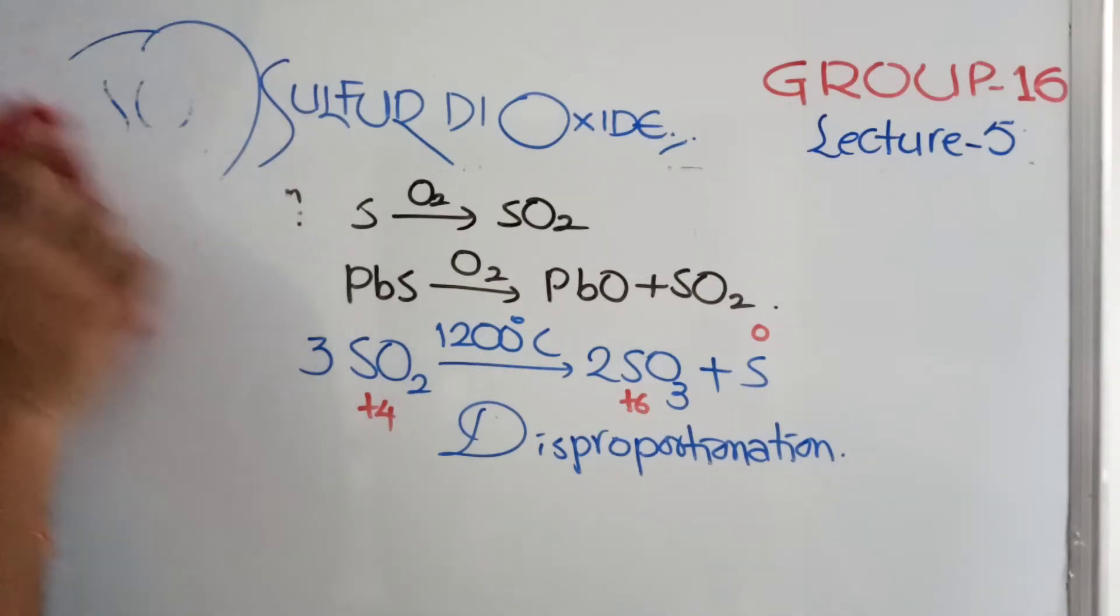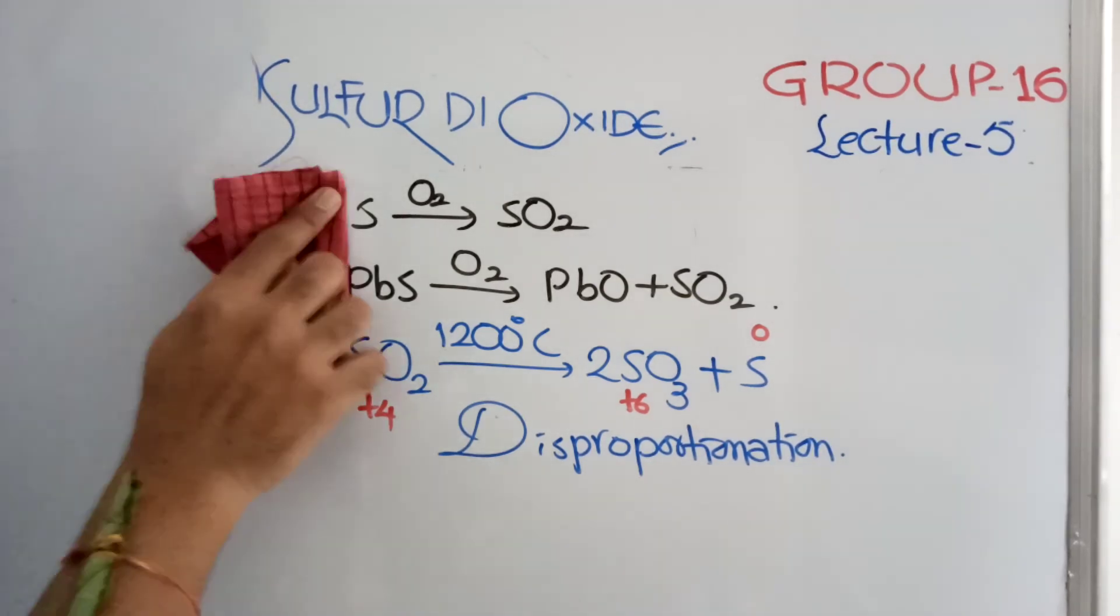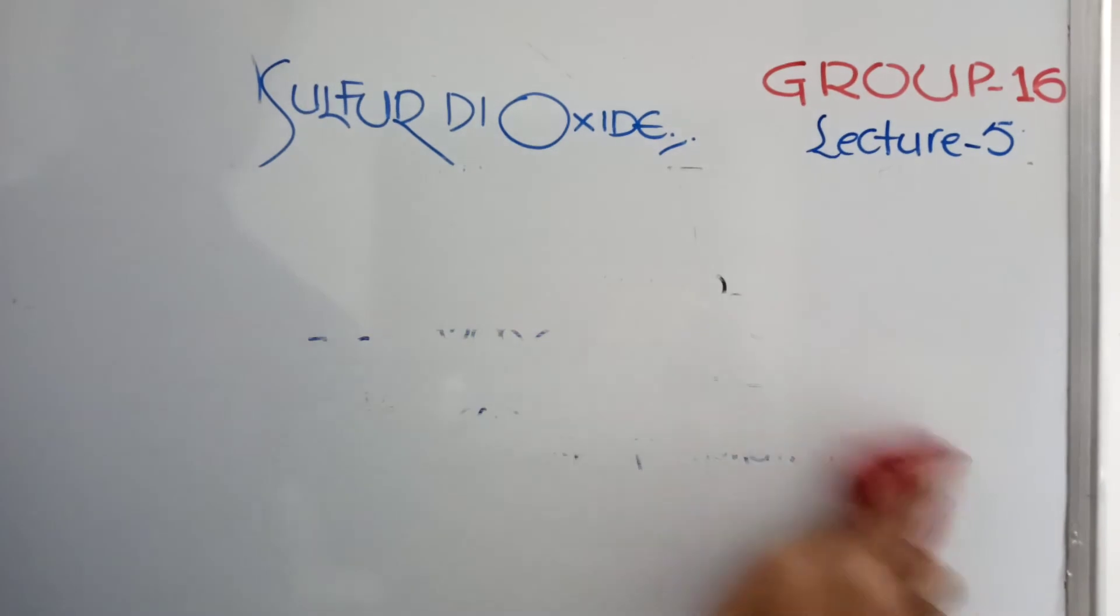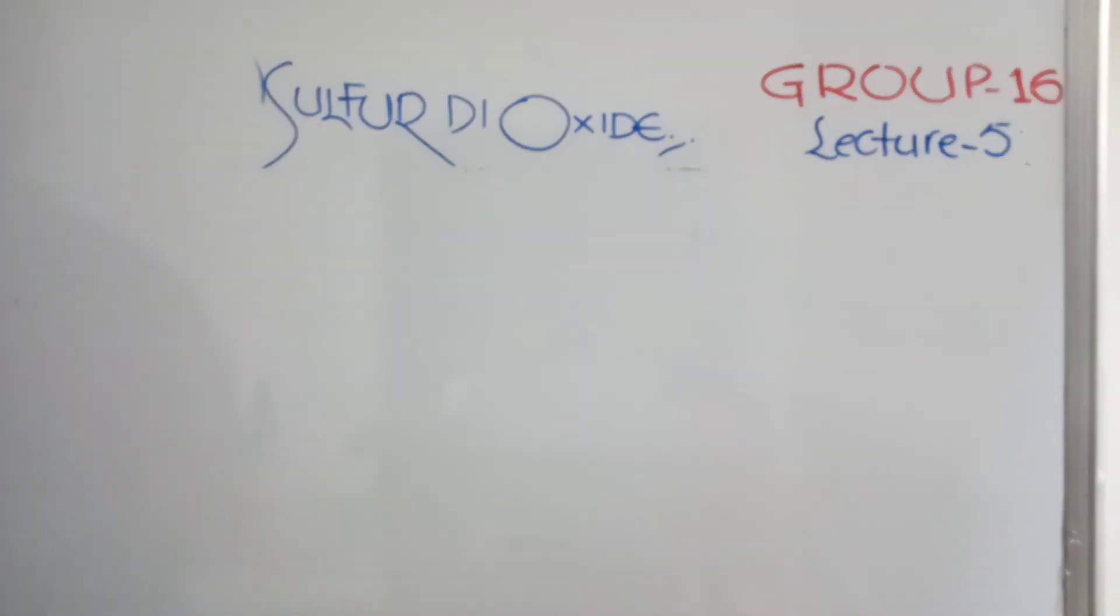About Sulfur Dioxide we are discussing, other properties we'll see. Because of intermediate oxidation state, Sulfur Dioxide is oxidating agent as well as reducing agent. We'll see all the properties one by one.